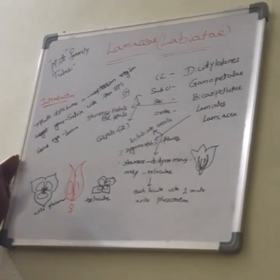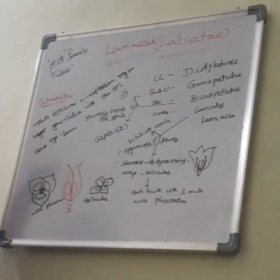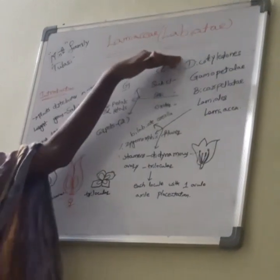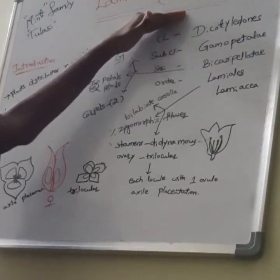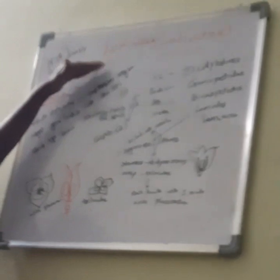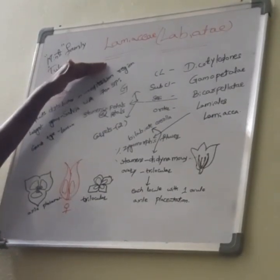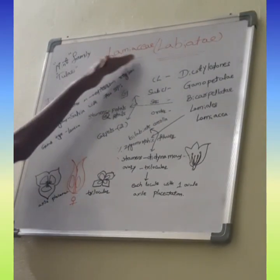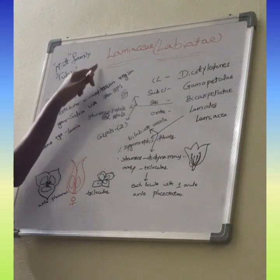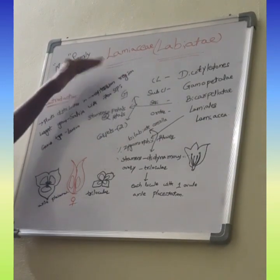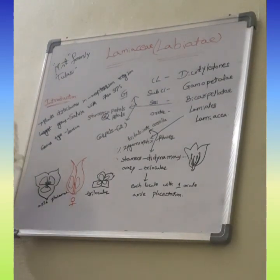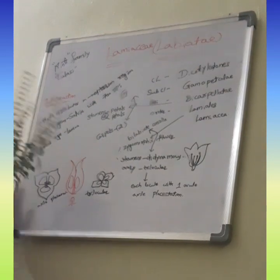Good morning my dear students. Today I will discuss about the LAMIAC family. LAMIAC family's previous name is LABIATI. After this, LABIATI family is converted into LAMIAC family because as per the ICBM rules, the suffix of the family is kept at IC. This LAMIAC family is commonly called as MINT family or TULASI family.